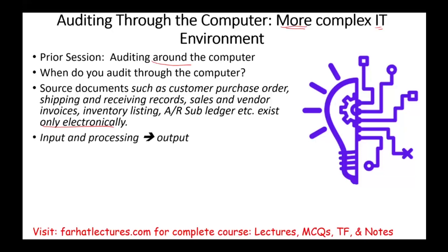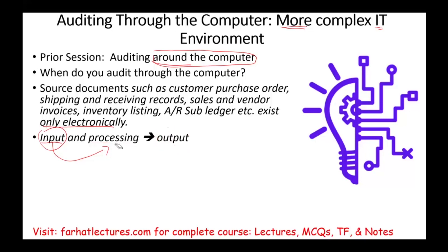In auditing through the computer, we are testing the input and the processing step. If we have the input and the processing, we're going to have an output. In contrast, auditing around the computer focuses on the input and the output — we did not touch processing. Here, we're going to look at the processing and test the computer information system itself.